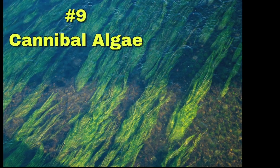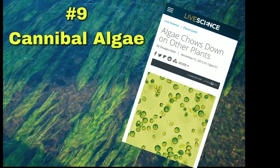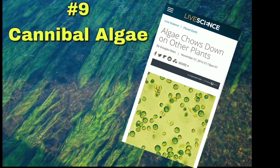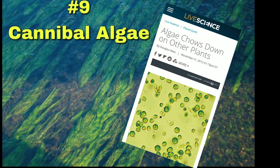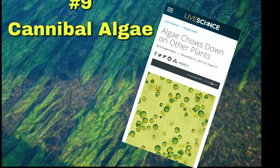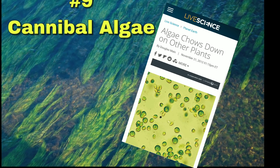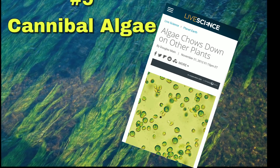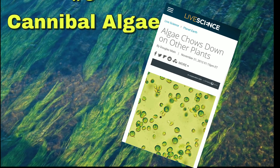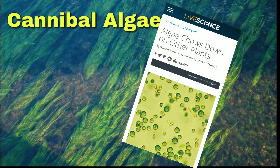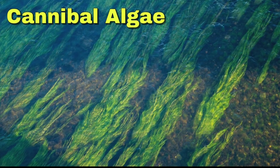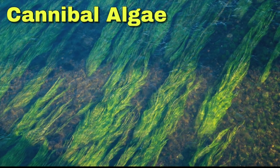Number 9: Cannibal Algae. According to LiveScience.com, in an article by Douglas Main from November 21, 2012 titled 'Algae Chows Down on Other Plants,' when deprived of other food sources, a widespread type of green algae can break down other plant materials and slurp them up as food. It's the first time a member of the plant kingdom has been shown to break down another plant's cellulose and use it as an energy source. So you still have to feed the algae a little — which is why it's a wonderful sight to see a thin, almost velvety surface of algae growing on the walls or rocks in your pond.